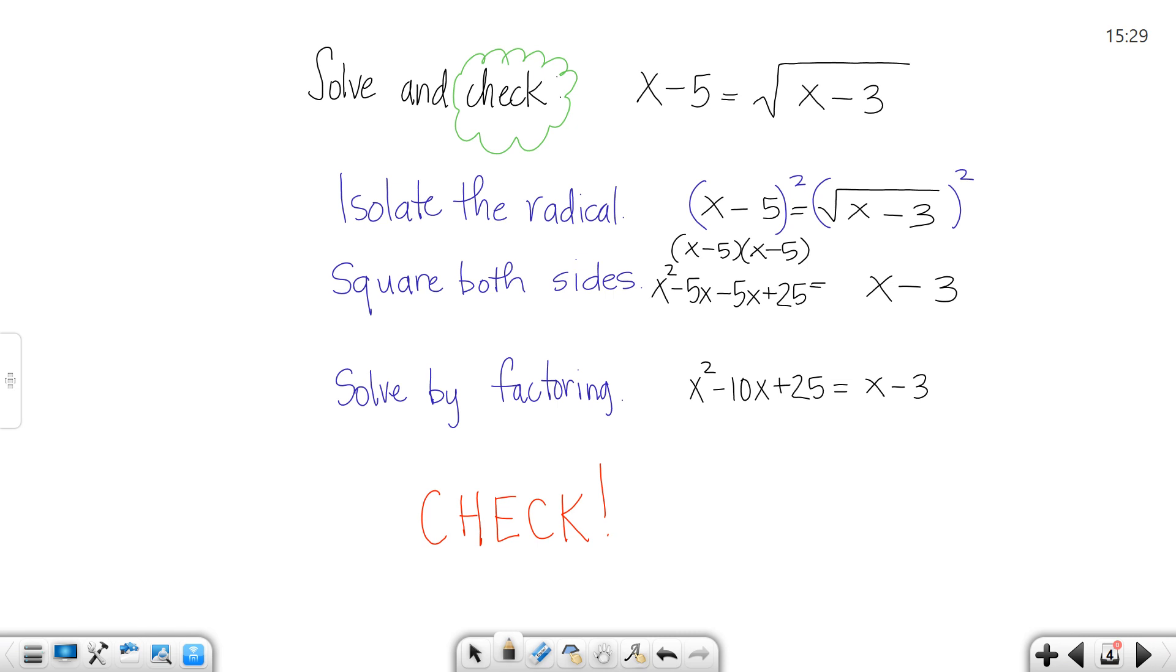Your next step says solve by factoring. Those are the same factoring rules that you've learned earlier. You want to get everything to one side. So I'm going to choose to move this x over. So when I move this x over, that changes its sign and moves it over and I add 3 to both sides to get rid of it. So what that's going to give me is an x squared minus 11x plus 28 and that equals 0.